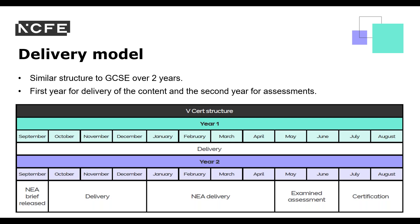All technical awards now have a terminal assessment rule as stipulated by Ofqual and the DfE. This means that the external examinations must be taken at the end of the qualification and the non-exam assessment, i.e. the synoptic project, has been completed. NEA briefs will be released on the 1st of September each year and can be administered from September if all the content has been taught. Final marks must be submitted to the portal by the 30th of April. It can be delivered over three years, though we recommend a two-year delivery model to coincide with GCSEs.